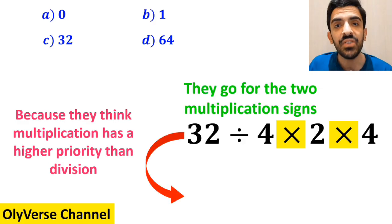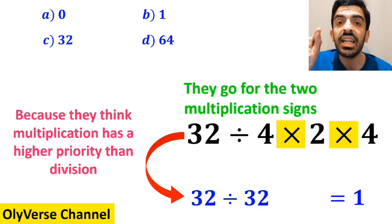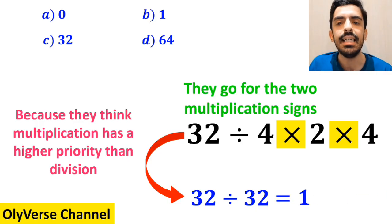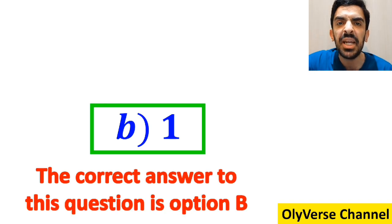So instead of this expression, they write 32 divided by 32, which finally gives them the answer 1. And immediately they conclude that the correct answer to this question is option b.